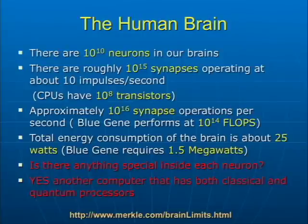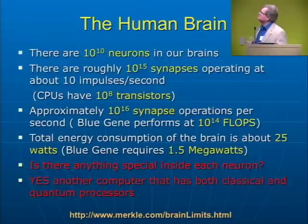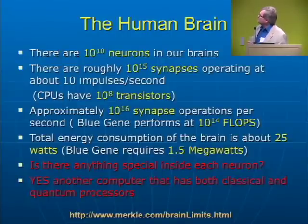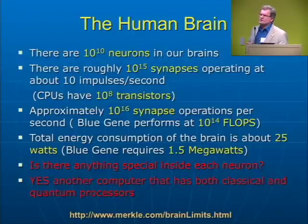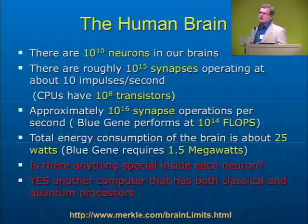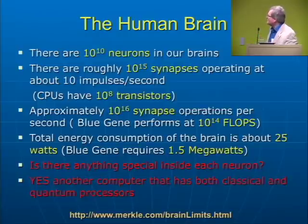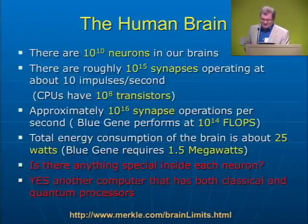On the issue of the human brain and its capabilities, there are some numbers to quote. We have 10 to the 10th neurons, roughly 10 to the 15th synapses — about 100,000 synapses per neuron. Synapses operate at about 10 impulses per second, giving 10 to the 16th synapse operations per second, which compares to 10 to the 14th flops of the Blue Gene. So even at the most classical level, the brain is better than the Blue Gene. And it only consumes 25 watts as opposed to 1.5 megawatts for the Blue Gene.